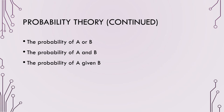Here are three different types of probabilities. We're going to talk about the first two: the probability of A or B and the probability of A and B — disjunctive claims and conjunctive claims. The probability of A given B will come into play more with the fallacies discussed in the next module.